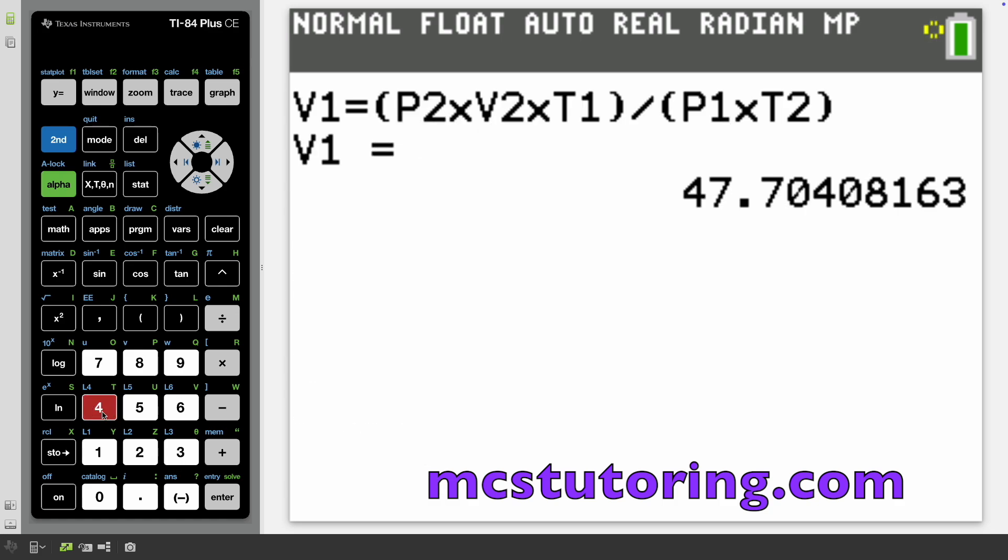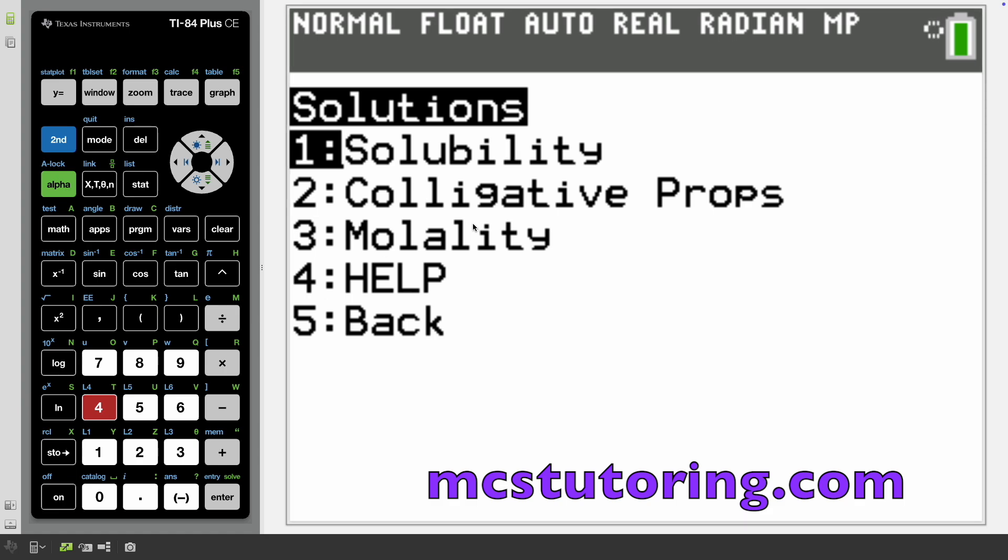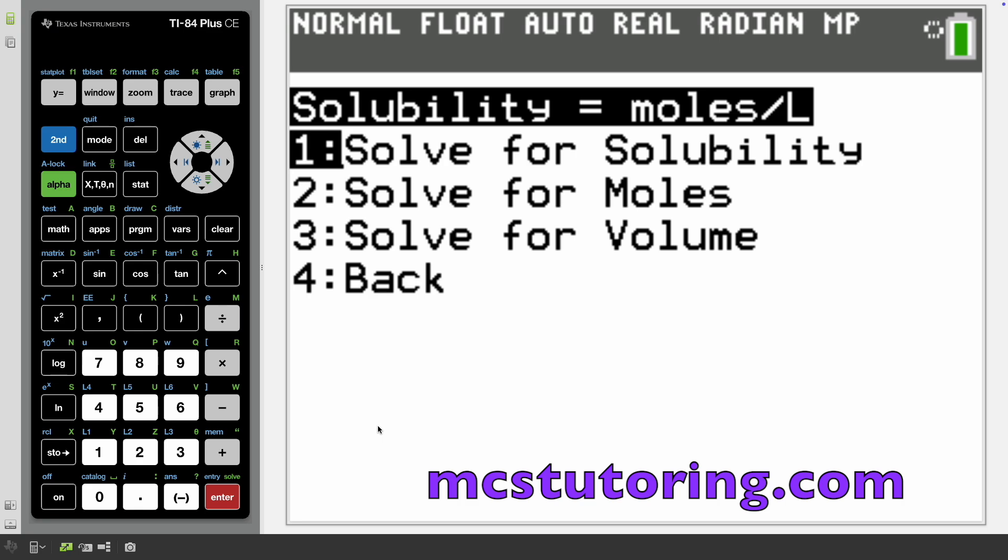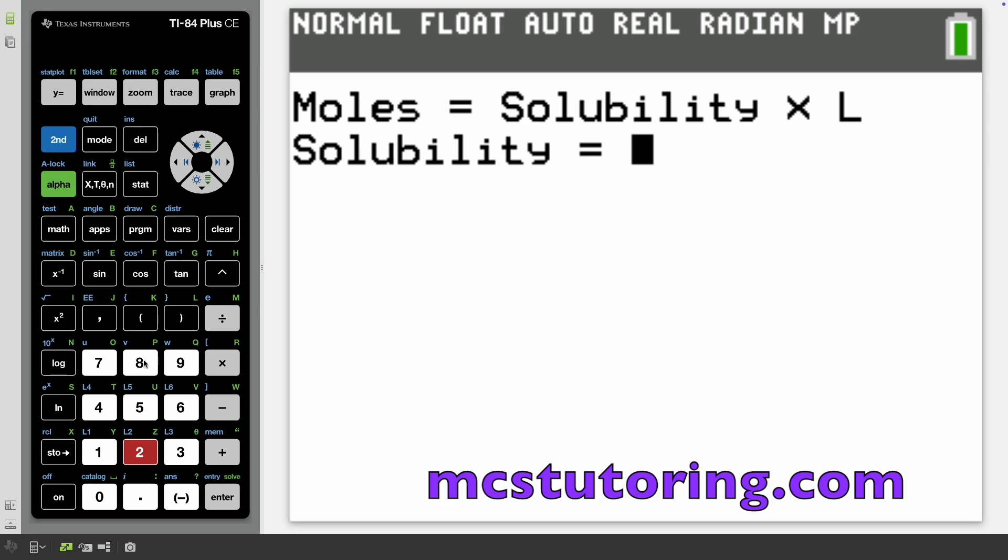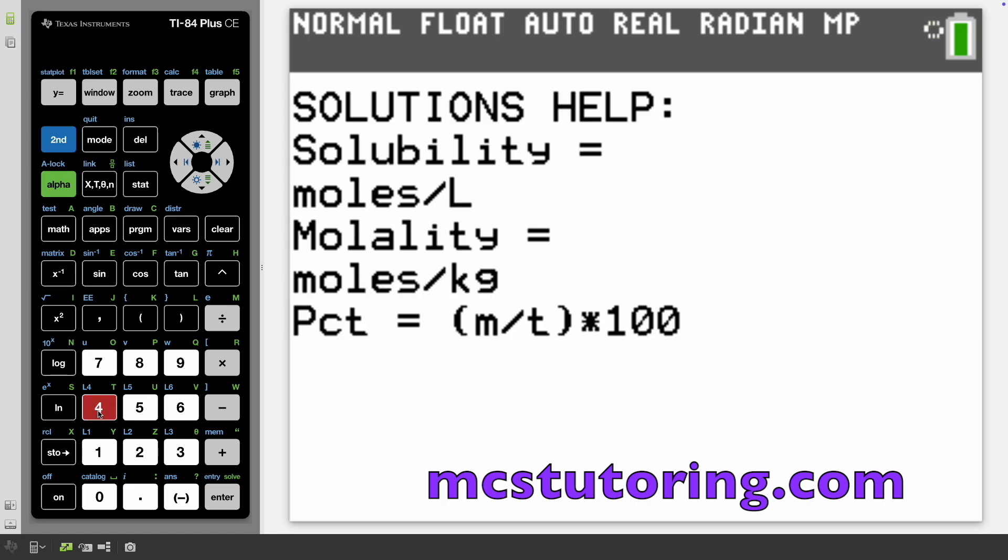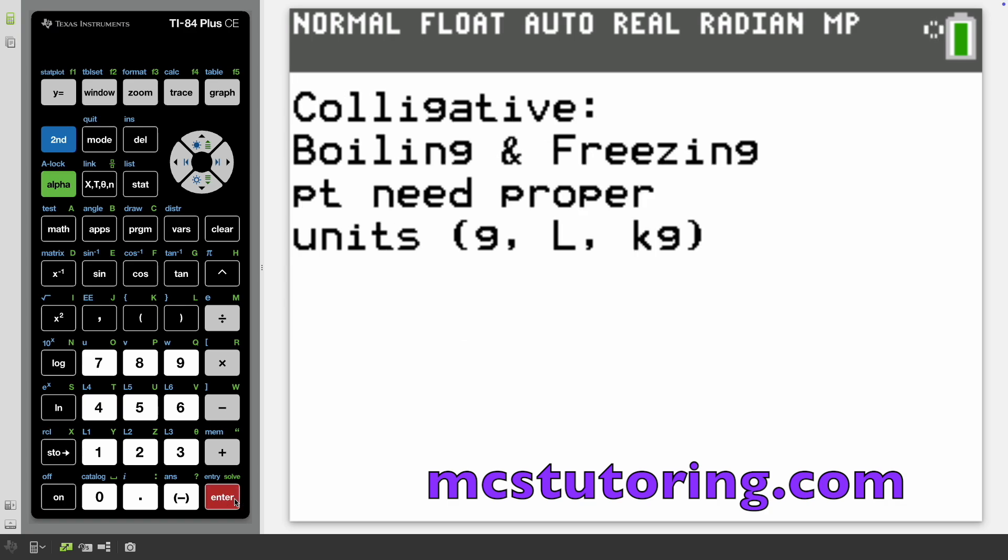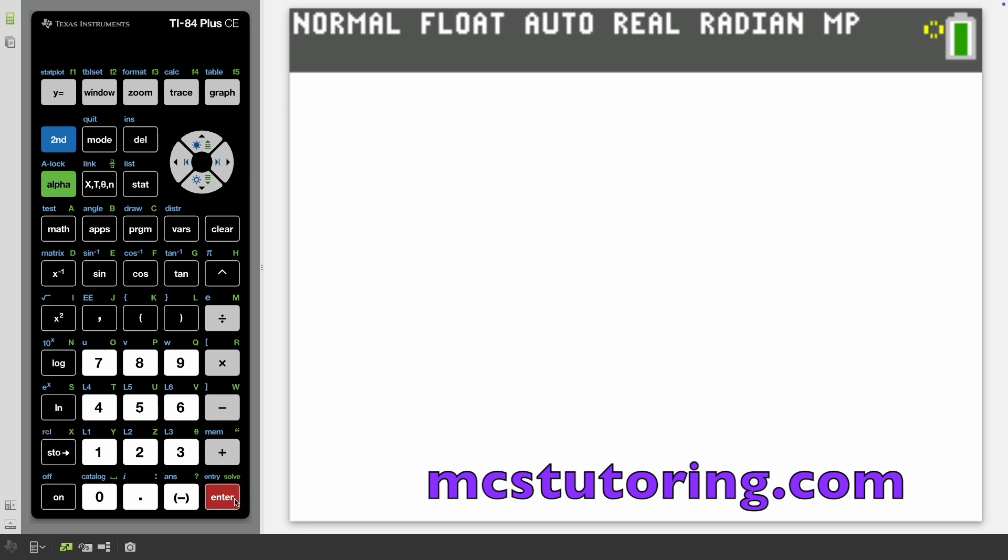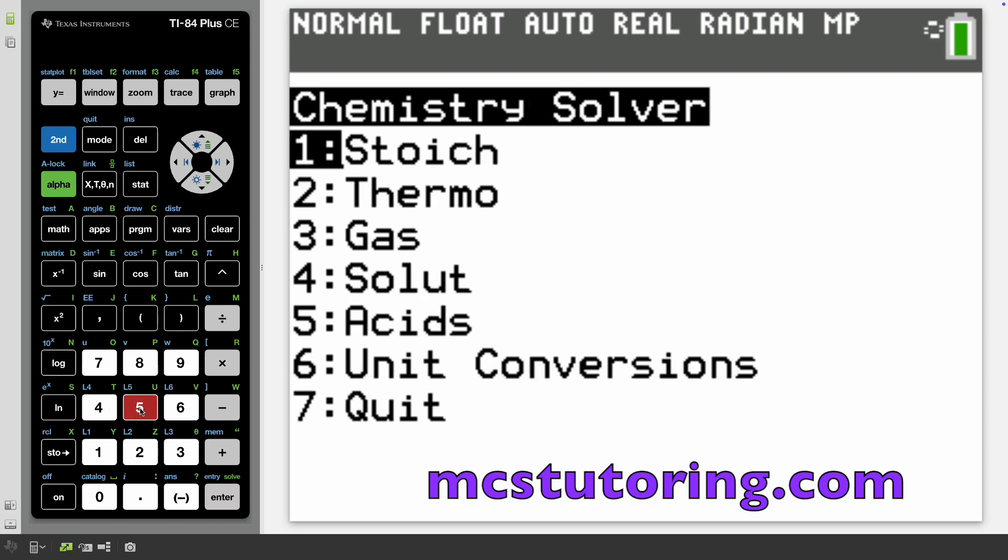Solutions. Let's go over that real quick. You get solubility, colligative properties, molality. Let's go over solubility. You can solve for solubility, moles or volume. Let's solve for moles. Solubility is eight, volume is 32. We've got moles 256. It shows you the formulas in the help menu.